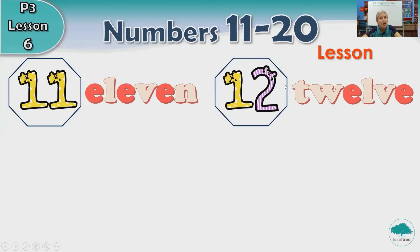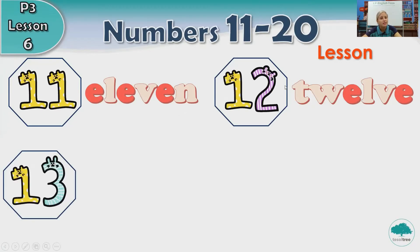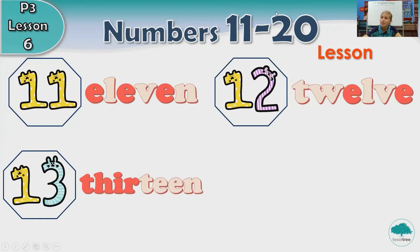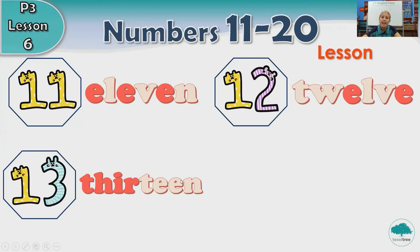What comes after twelve? Thirteen. Very good. How do we spell thirteen? Do you know? Let's spell together. T-H-I-R-T-E-E-N. Thirteen.